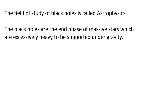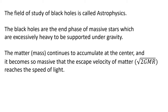These black holes are similar objects. They are very heavy and the mass actually continues to accumulate at the center. In doing so, it becomes so massive that the escape velocity of matter, given by the square root of 2GM/R, reaches the speed of light because M keeps increasing. When it does, neither light nor matter can come out, and that is why it is called a black hole.